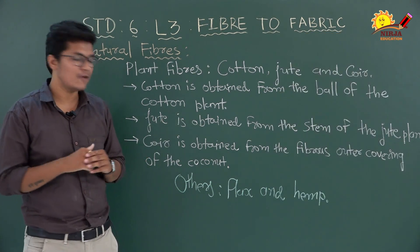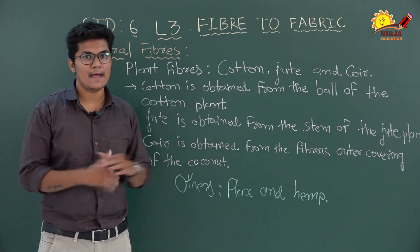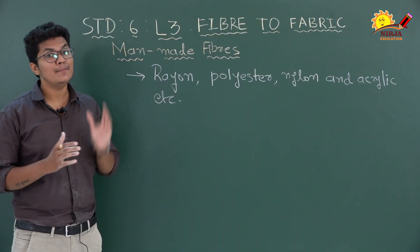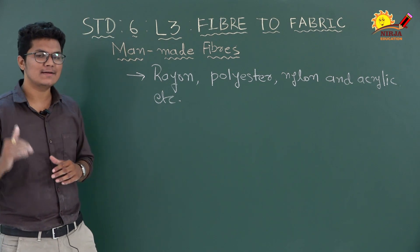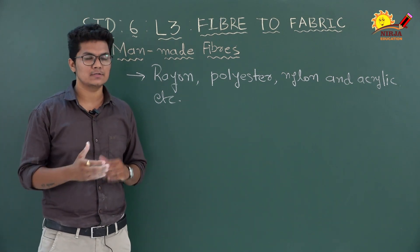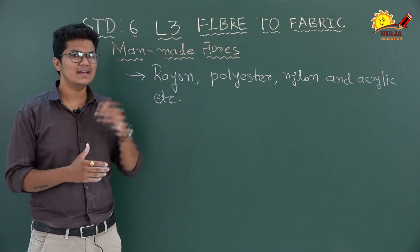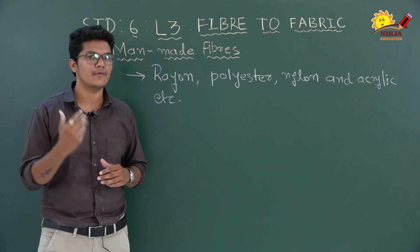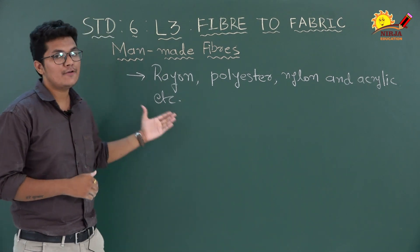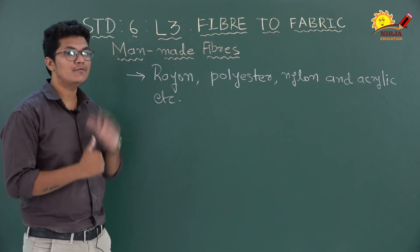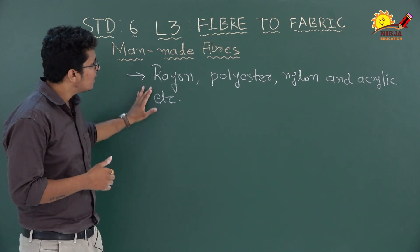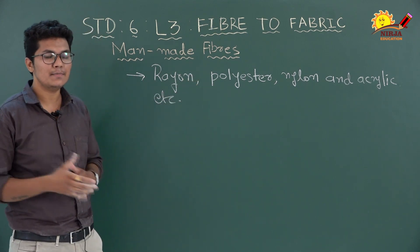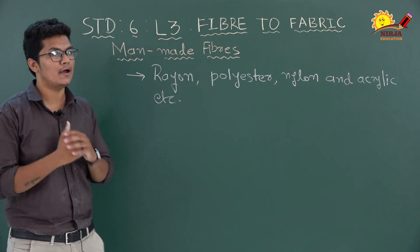Other plant fibers are flax and hemp. Fibers that we make in factories using chemical substances and chemical reactions are called man-made fibers. Rayon, polyester, nylon, and acrylic are some examples of man-made fibers.